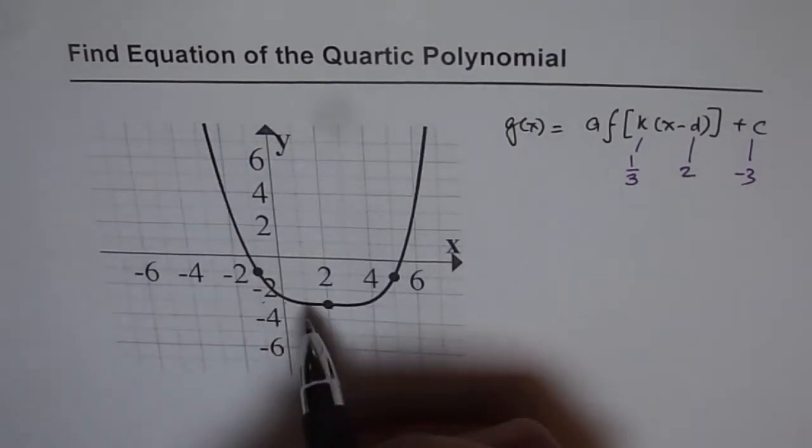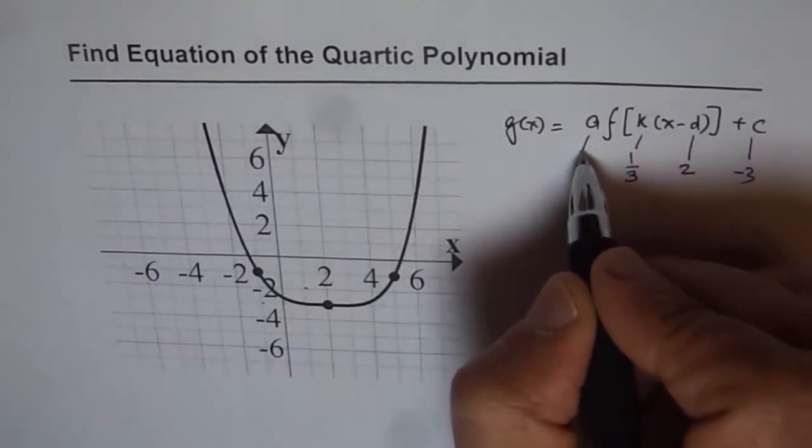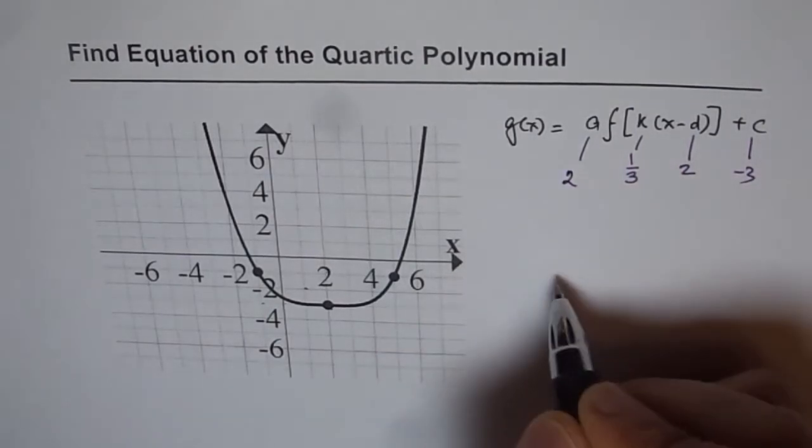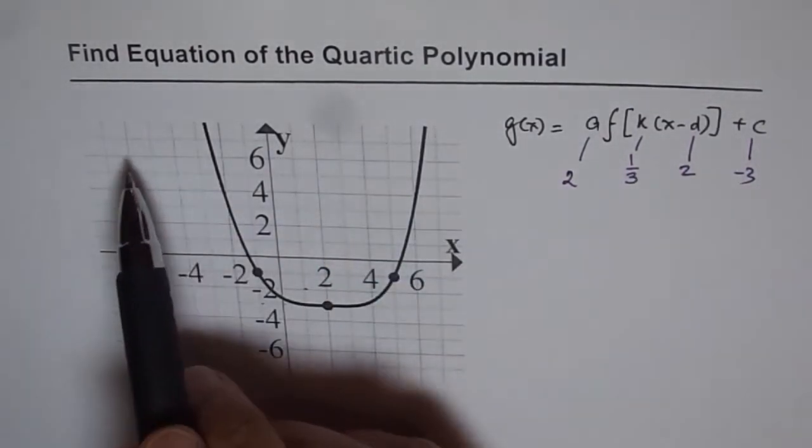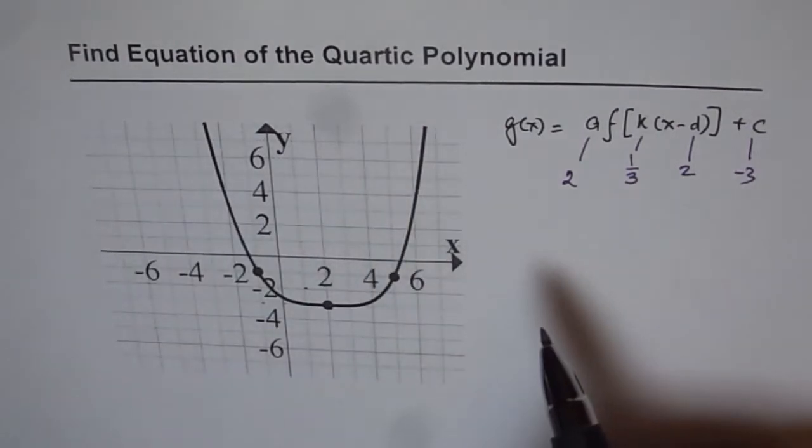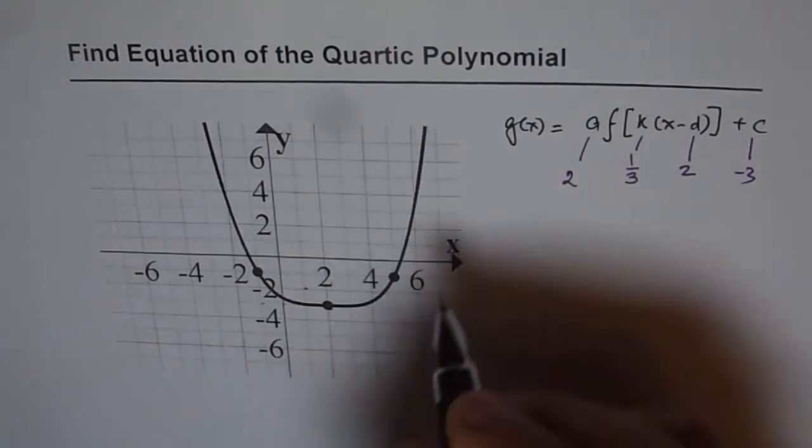Now, vertical stretch or compression. We are expecting this point 1 unit on the right, but instead it is 2. Therefore, a is 2 for us. Now, shape of the graph is same, of course, and it is from quadrant 2 to 1. So, there is no reflection in this case. That becomes the equation of this given transformed function.